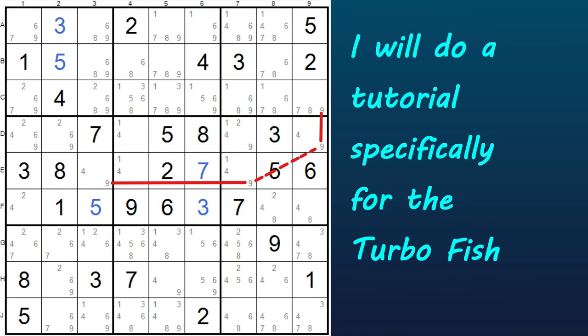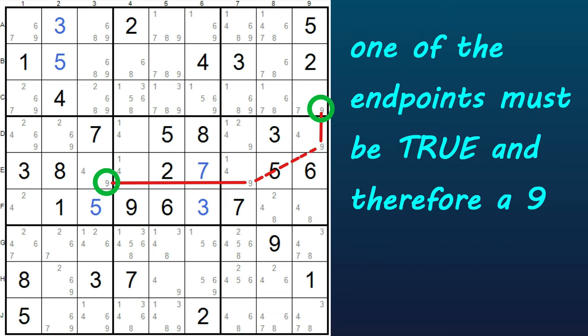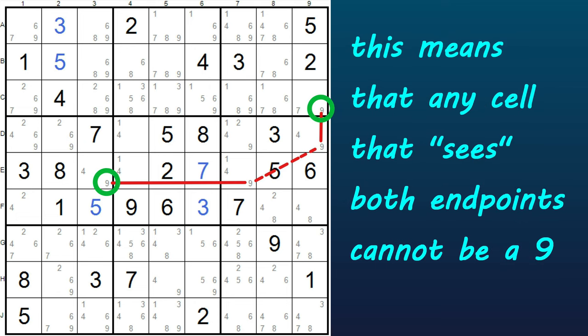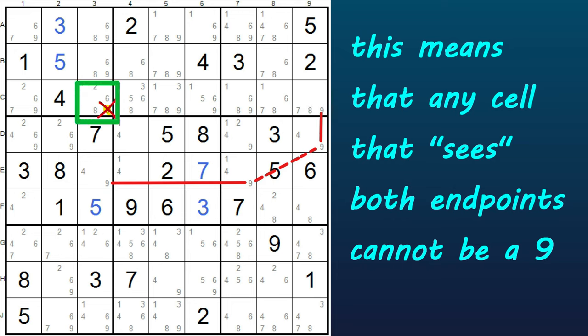I'll do a future lesson on turbofish and discuss it some more in that lesson. But this is still a two-string kite — it just looks a little different from the first example. These two 9s are called the endpoints, and at least one of the endpoints must be true, so one of these endpoints must be a 9. Therefore, any cell that sees both endpoints cannot be a 9, and therefore the 9 can be eliminated from that cell. This cell in the third row and third column can see both endpoints, therefore the 9 in this cell can be eliminated.